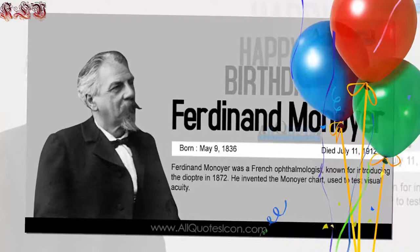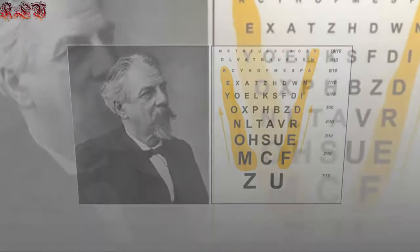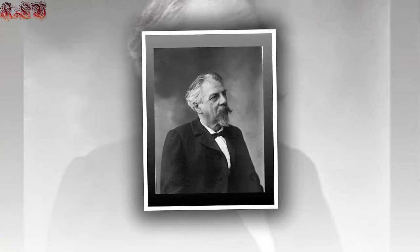Monoyer was born in Lyon, France on May 9, 1836. He served as an associate professor of medical physics at the University of Strasbourg from 1871, and later worked in Nancy and Lyon. He died on July 11, 1912, at the age of 76 years, and was interred in the Cimetière de la Guillotière in Lyon.